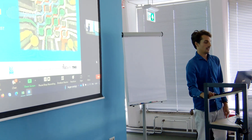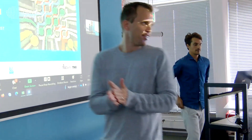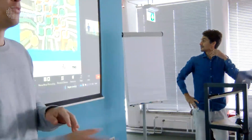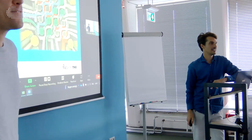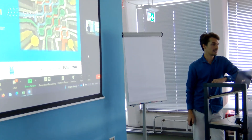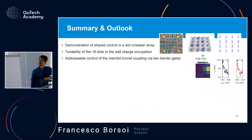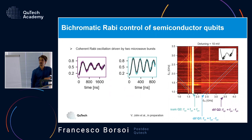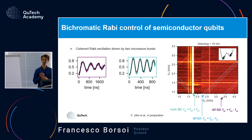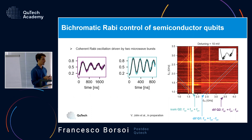Question from the audience: When you show the two-tone Rabi oscillations, how important is it that the two microwave bursts are synchronized with each other? Could you get beatings instead of sum-frequency behavior? We haven't had time to time-shift the two pulses, so we don't yet know. There are predicted beatings that depend on the signal power, but we haven't seen them yet. Certainly the two tones need to be coherent.